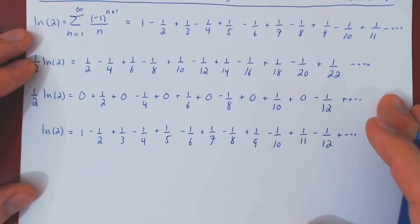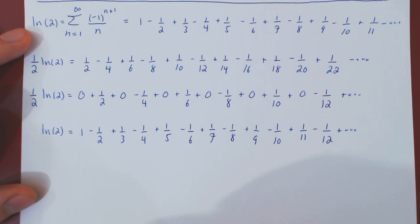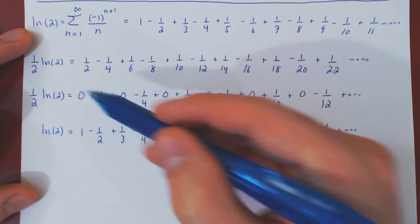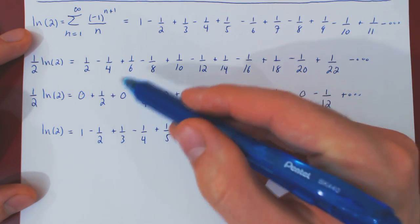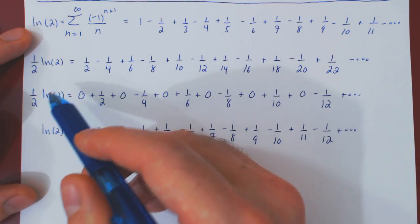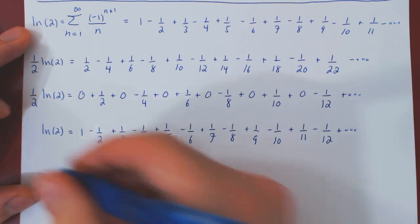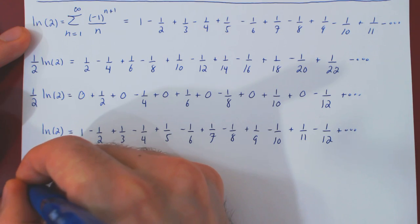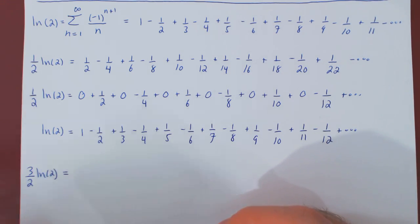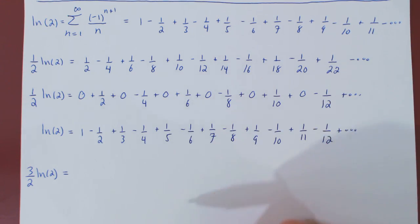The idea now is to simply add these two series together, adding corresponding terms — the first terms together, the second terms together, the third terms together, and so forth. One thing is clear: if we add one-half ln(2) to ln(2), we get three-halves ln(2). Let's see what happens after we add the corresponding terms of both series.